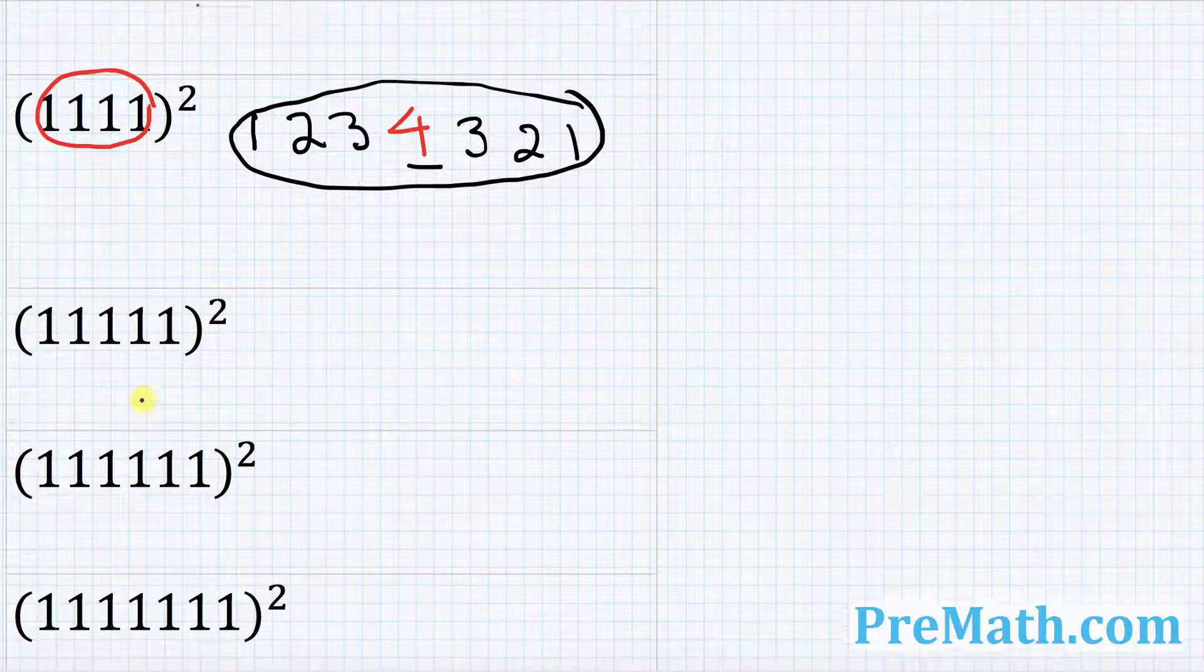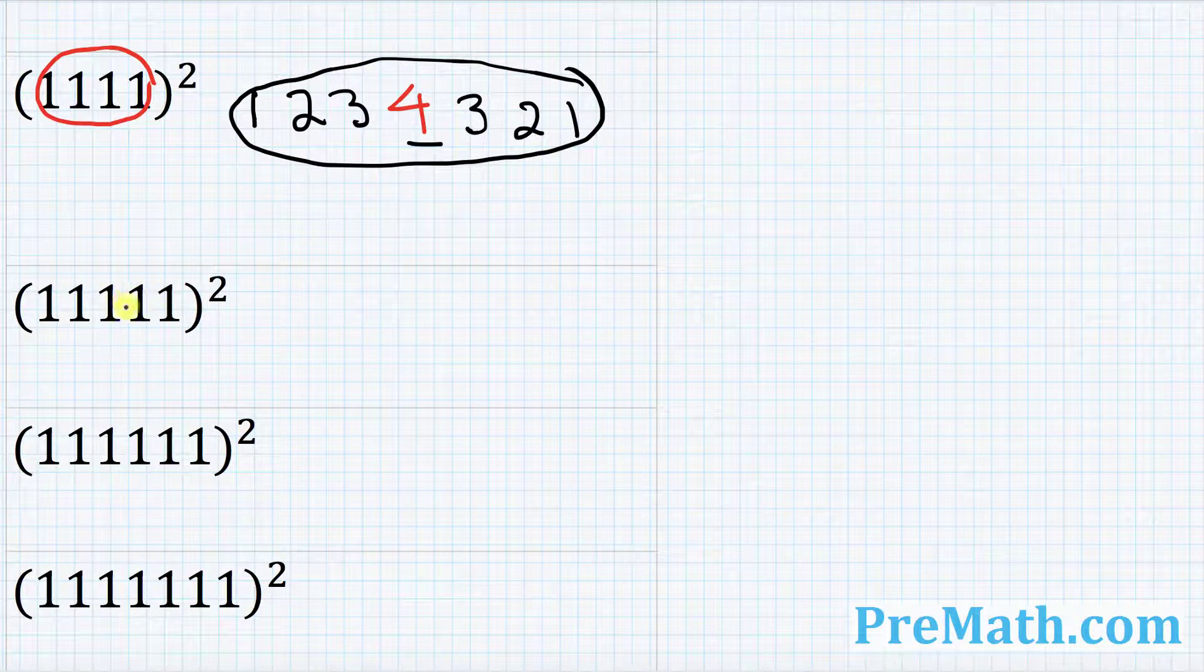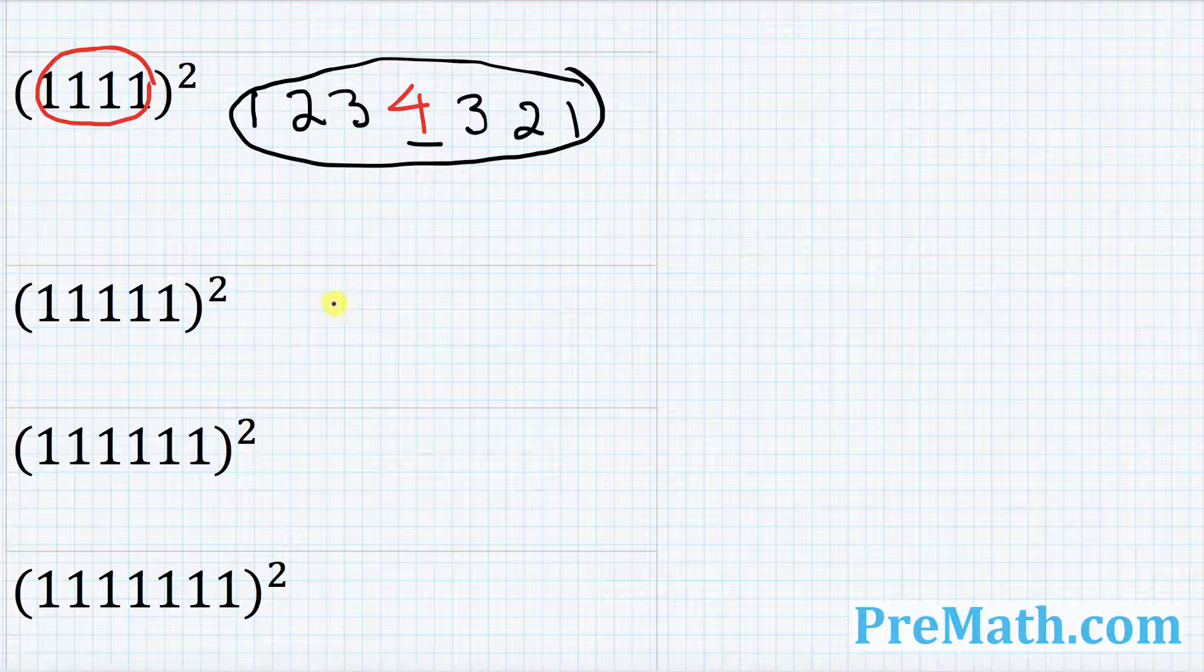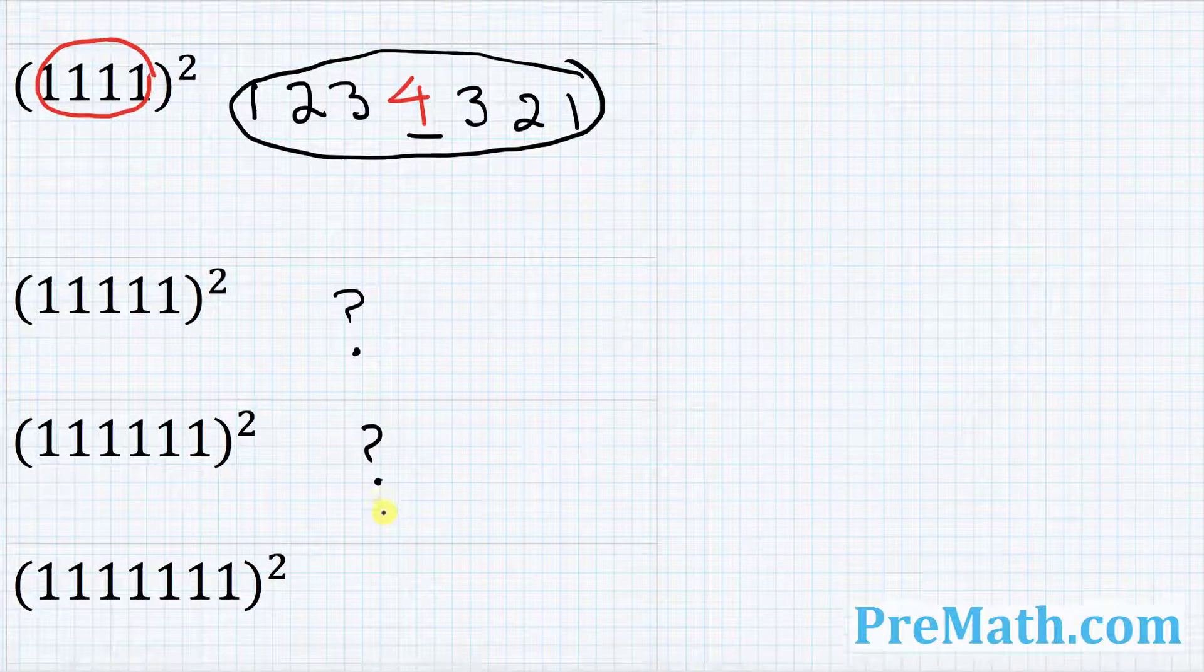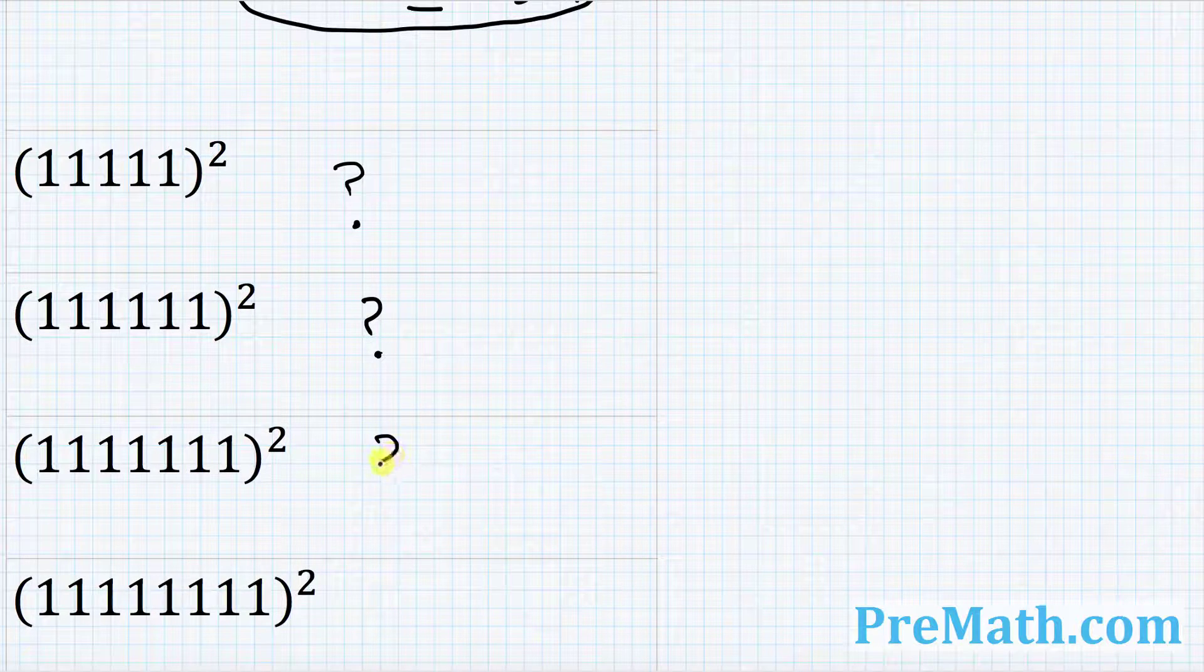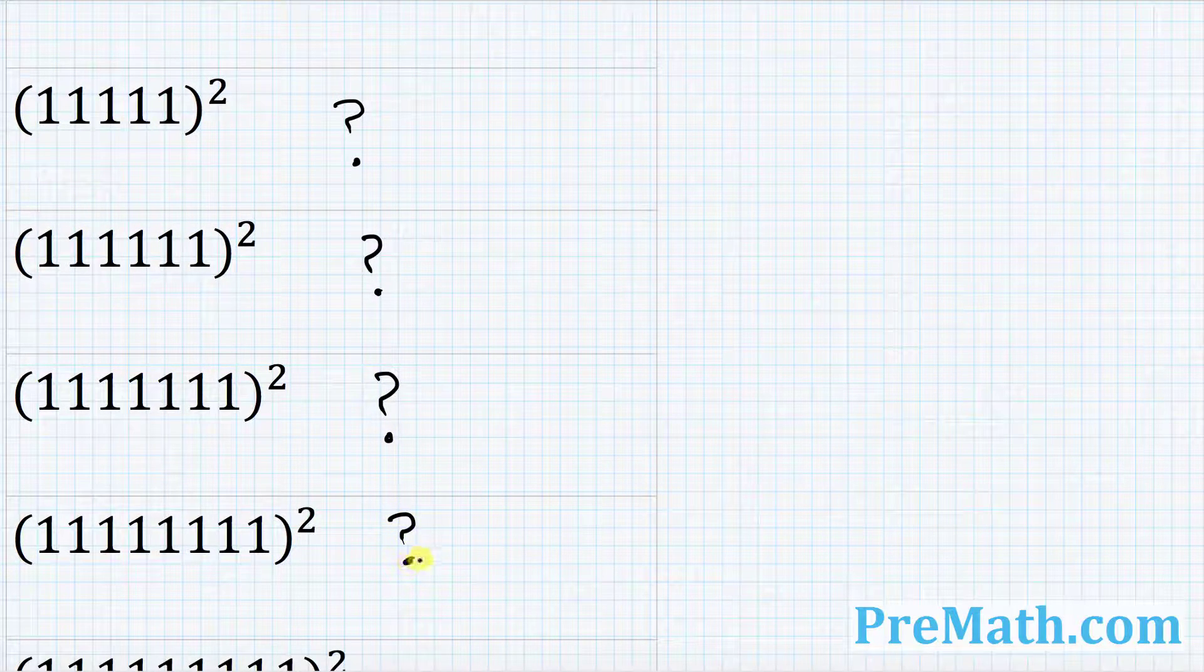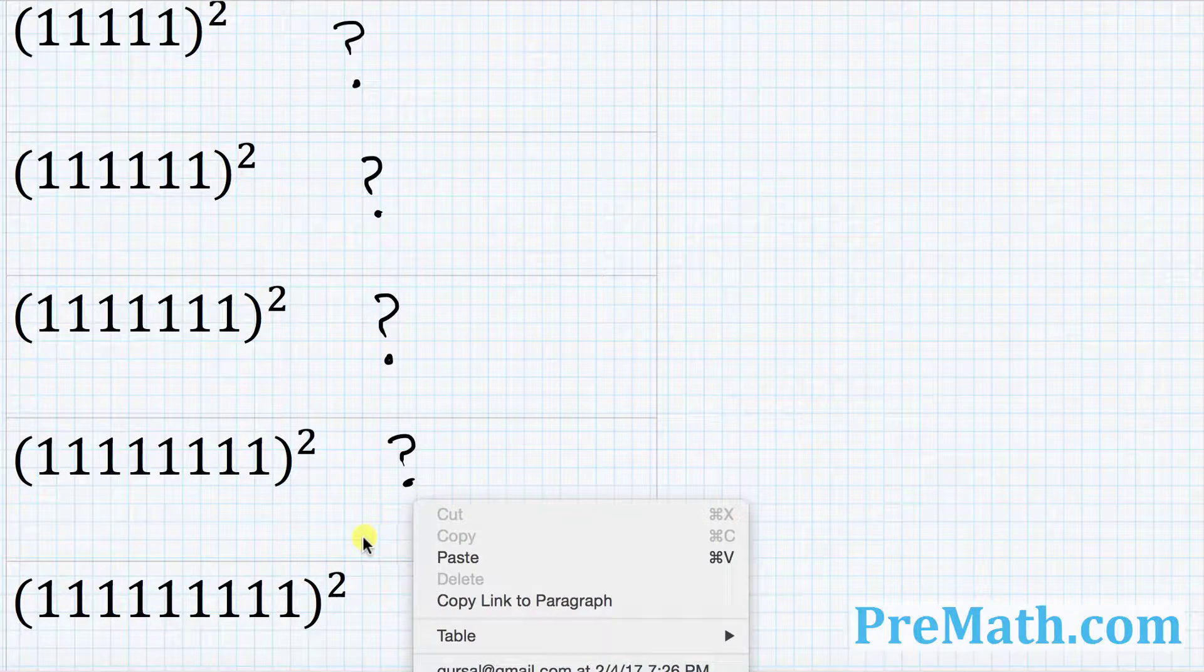Look at this next problem. How many ones we got? How many digits we got? We got five digits. Now can you figure out what is gonna be the answer to this one? How about the next one? Next few of them? So I am going to just wait for a few minutes and see how you gonna do this one.